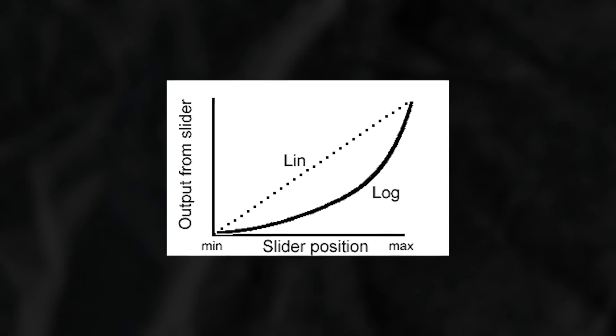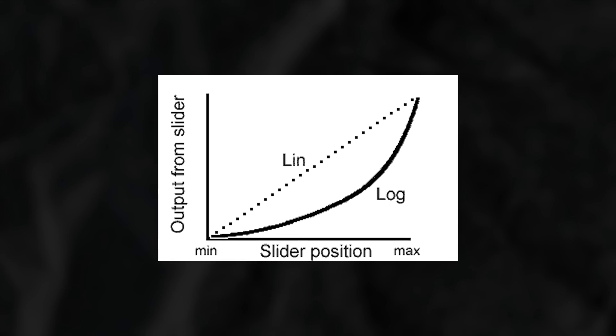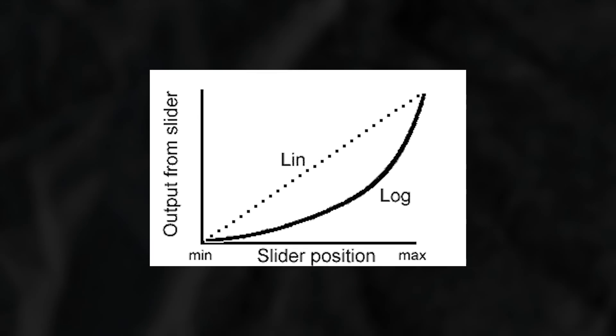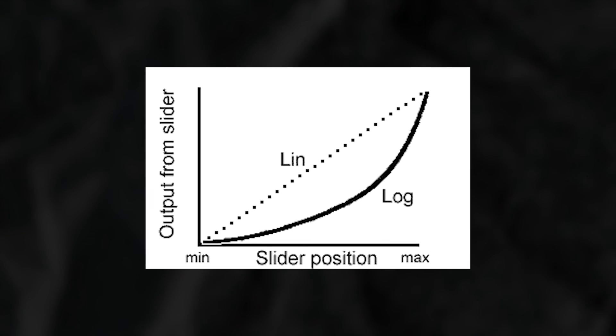If you know anything about lighting, you'll understand why that's so beneficial, because lights are based on stops. Every time you go up a stop, you double the amount of light. So a logarithmic scale makes way more sense when you're looking at exposure.